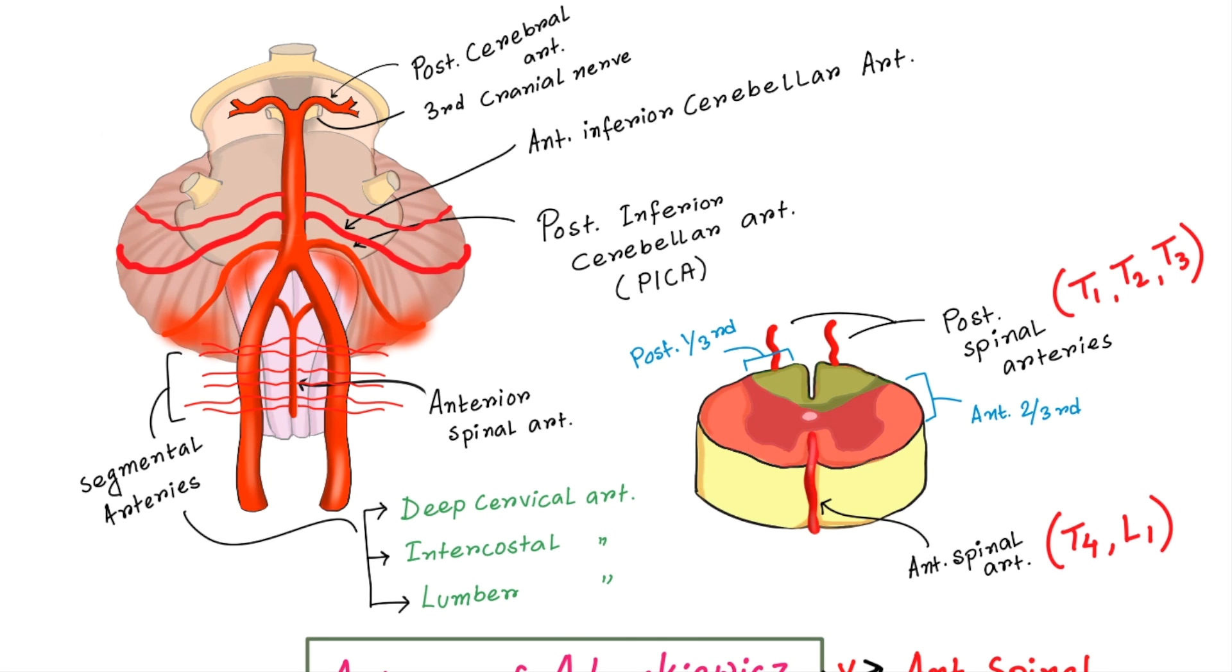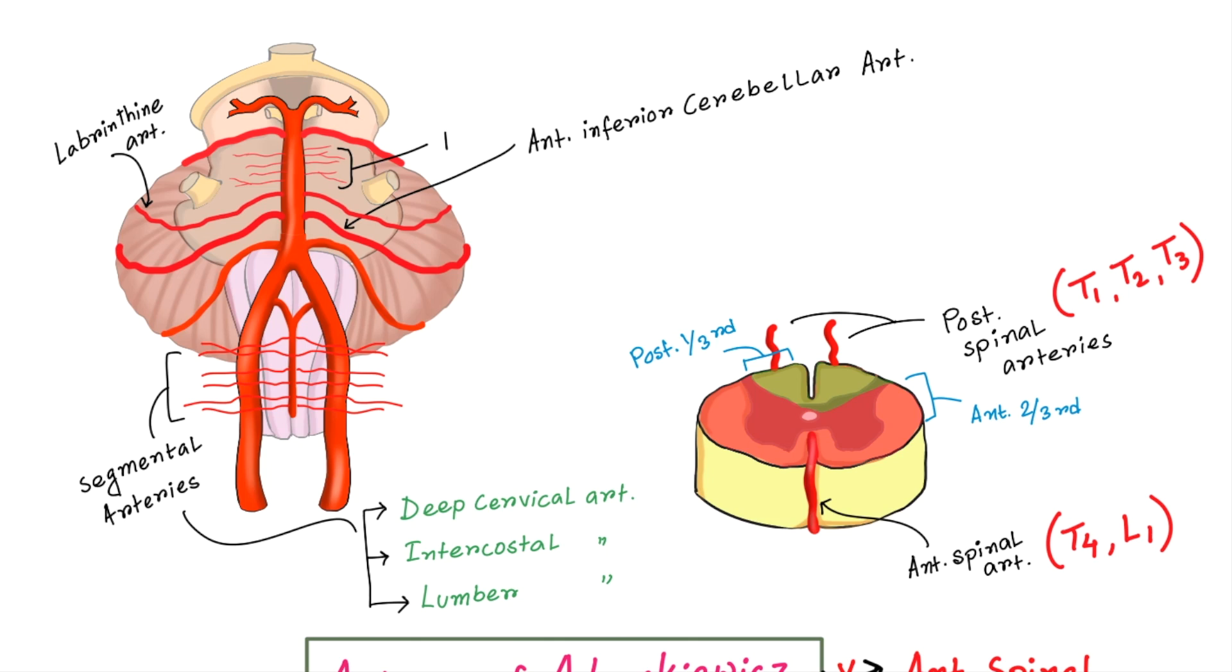Next branch originating from basilar artery or AICA and moves along the 7th and 8th cranial nerve and reach internal acoustic meatus and supply the inner ear. This artery is called Labyrinthine artery. Now there are some small branches here which are called Pontine artery. Those arteries supplies the Pontine area.